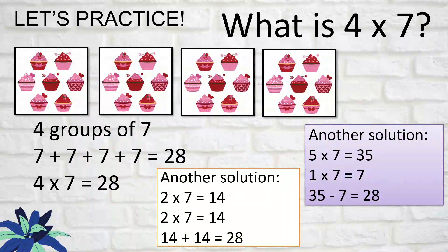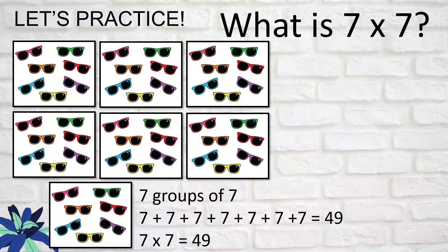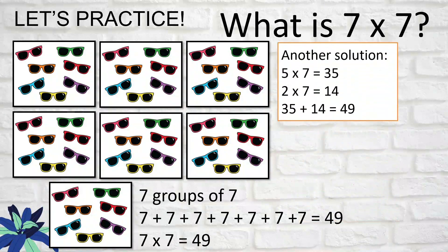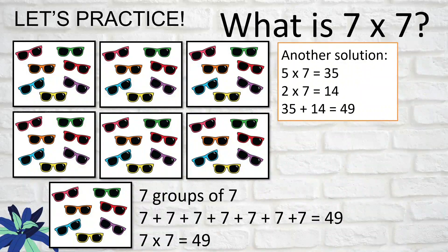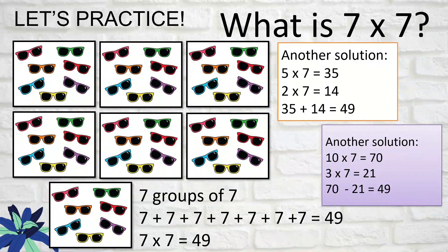What is seven times seven? Draw seven groups of seven — the answer is 49. Using the split method: five times seven is 35, and two times seven is 14, because five plus two equals seven. Add the products: 35 plus 14 equals 49. Using subtraction: 10 times 7 is 70, minus 3 times 7 which is 21, gives you 70 minus 21 equals 49.